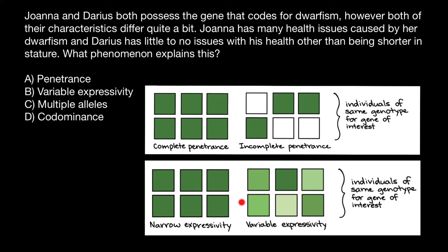But variable expressivity would be when a group of people who have the same defective allele would express it individually and differently — some to a lesser extent, some to a greater extent. Sometimes this depends on the environment, on the lifestyle of the person, on the age, and a number of different factors.